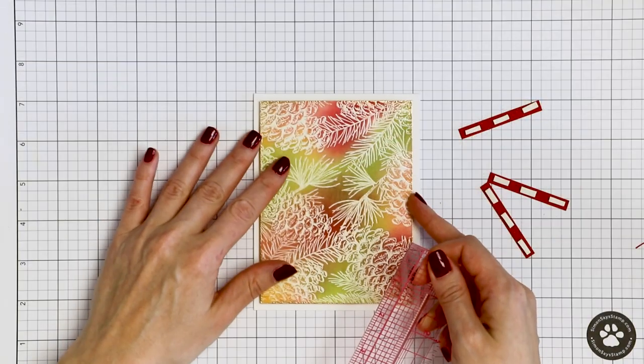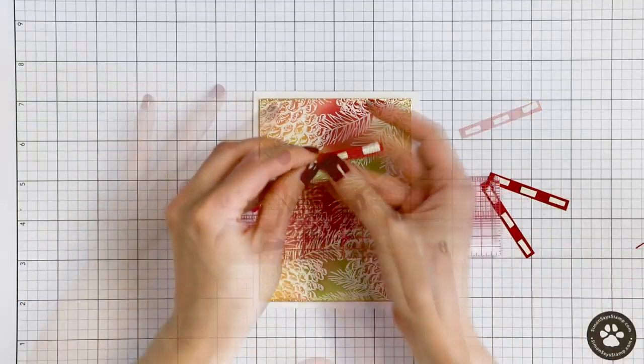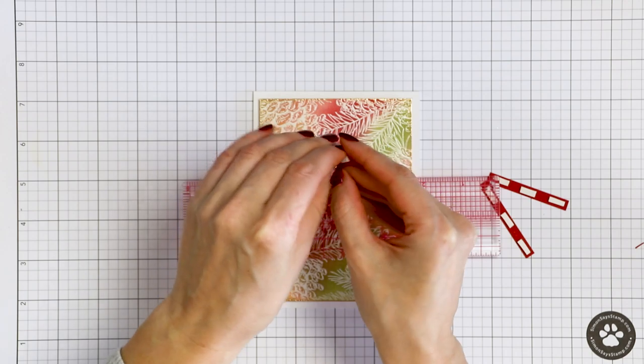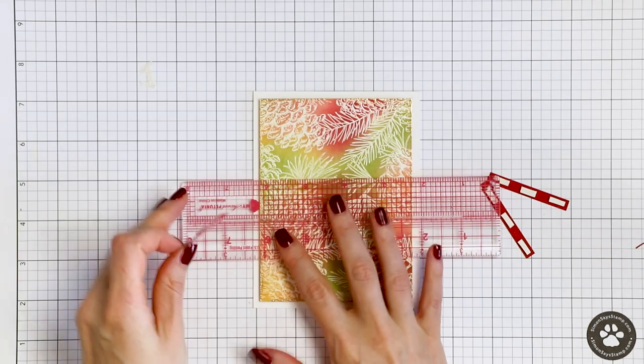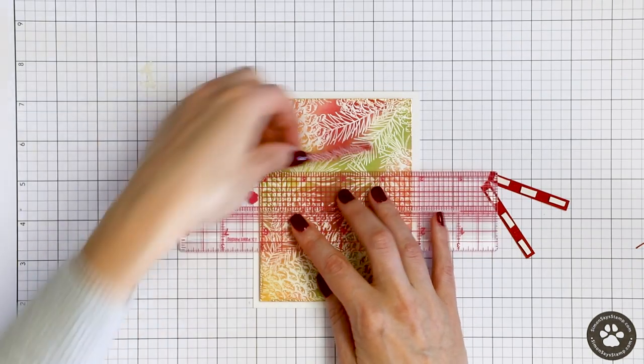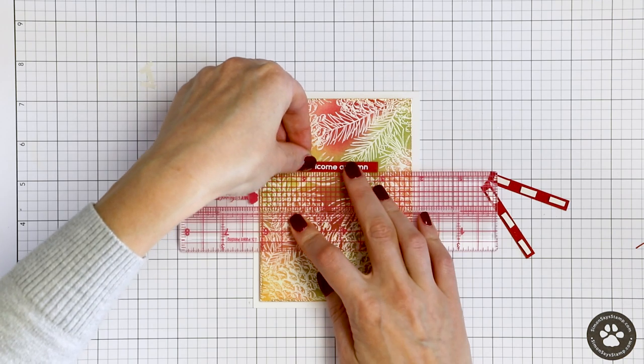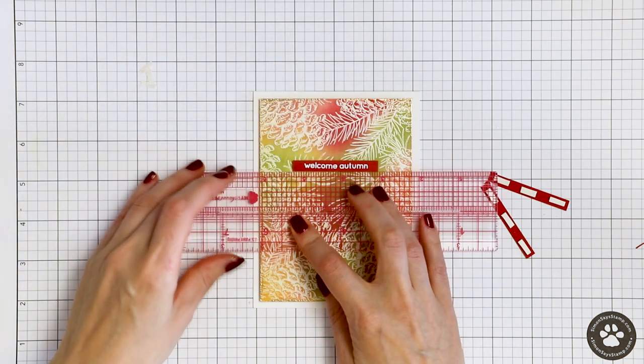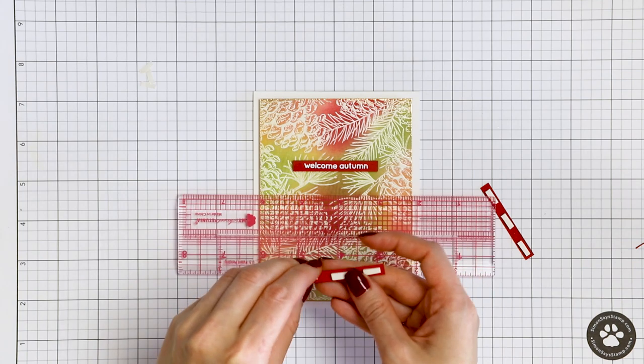Okay, I went ahead and foam mounted the panel onto A2 white top folding card base. I used Simon's pre-made card bases for this. I've also already heat embossed a sentiment. It reads welcome autumn and comes from the Autumn Greetings stamp set.